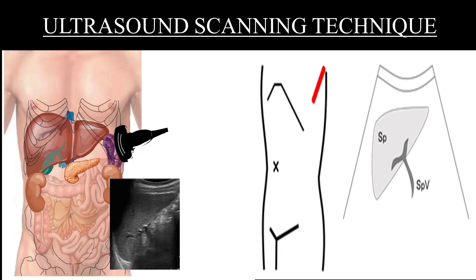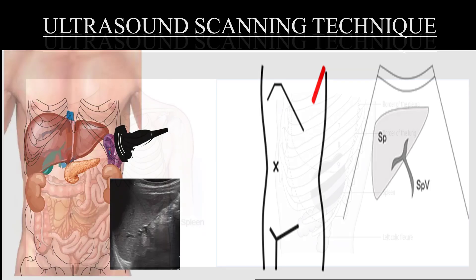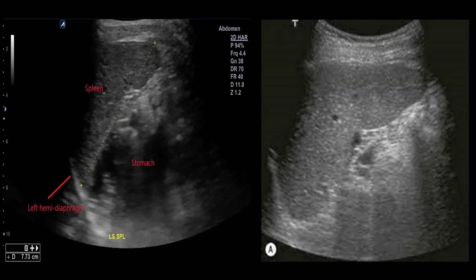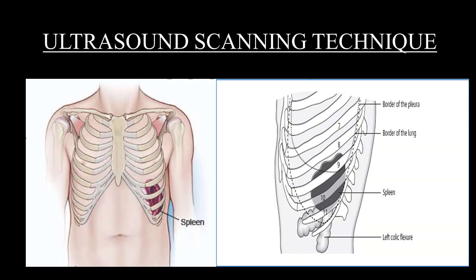Deep inspiration could introduce more air into the lungs and the lateral costophrenic angle may obscure visualization. The plane of section should be swept anteriorly and posteriorly to view the entire volume of the spleen. A thorough examination in the coronal plane is highly accurate for excluding lesions within or around the spleen and for documenting its approximate size. If an abnormality is discovered, other planes should be used. An oblique plane along the intercostal space can avoid rib shadowing.